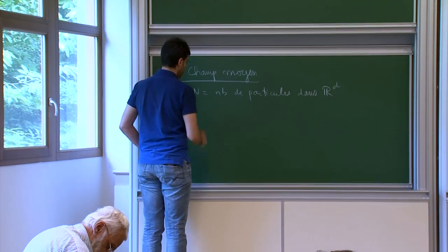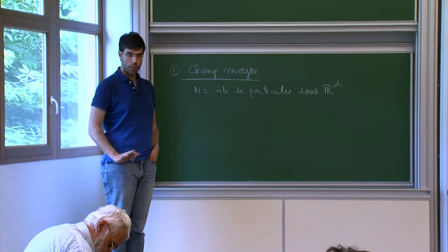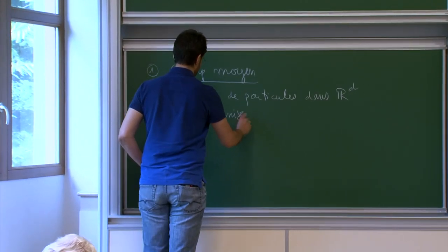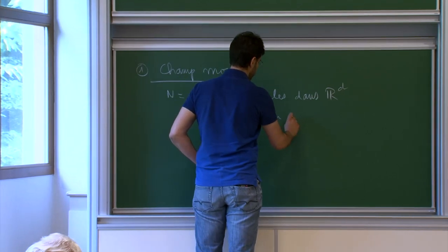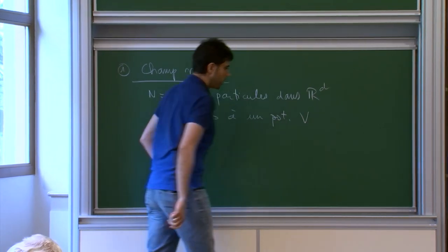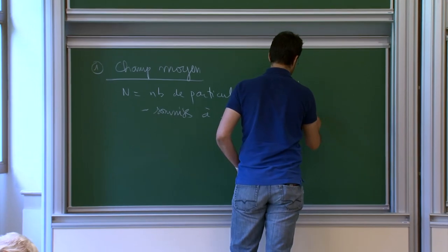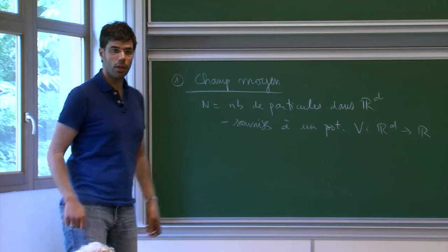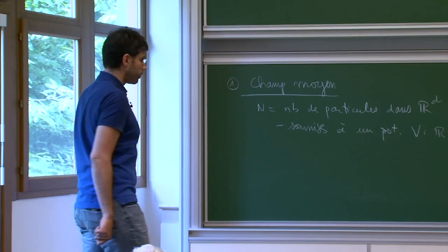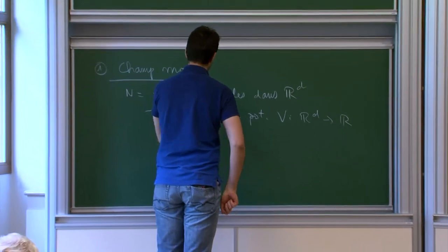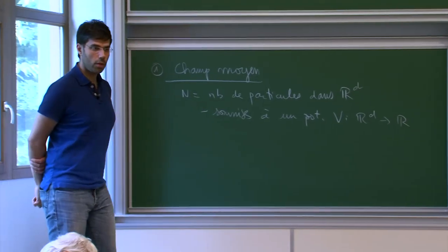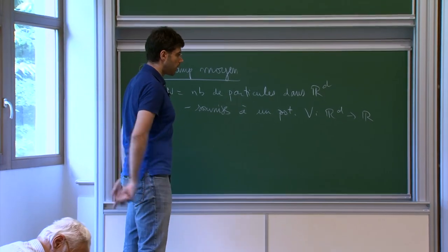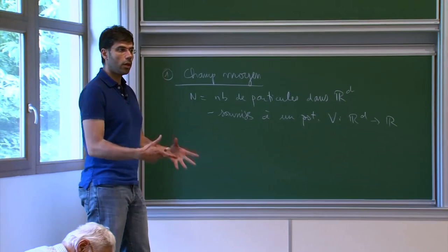These particles will first be all identical — they are all the same, which is important. They will be submitted to an external potential V, which is a function from R^D to R. The external potential is what the experimenter can do; it's the way he can act on the particles. We can choose V somewhat freely, though obviously some V are realizable in experiments and others are not.